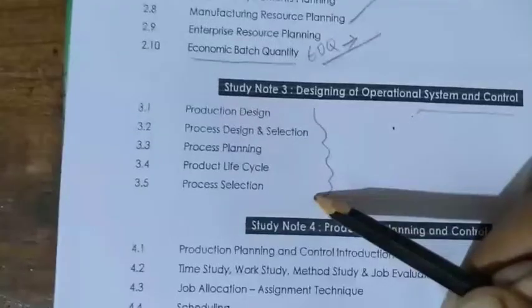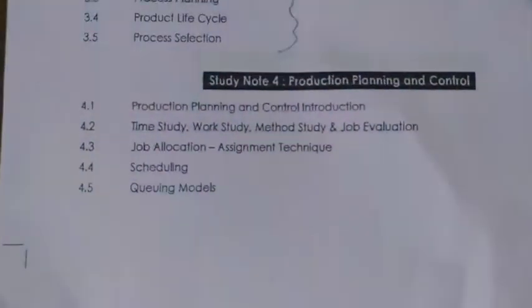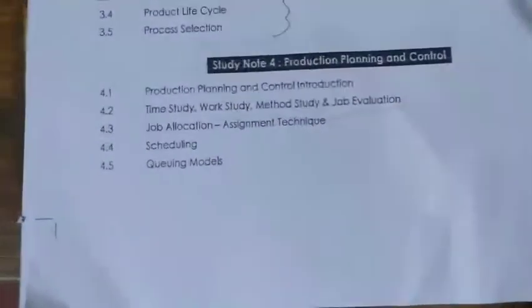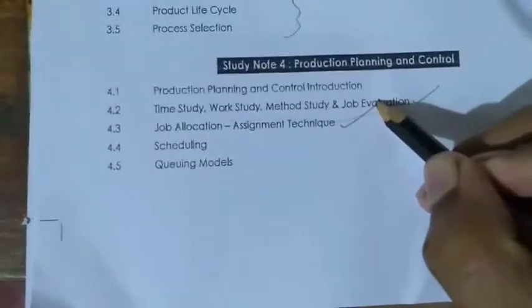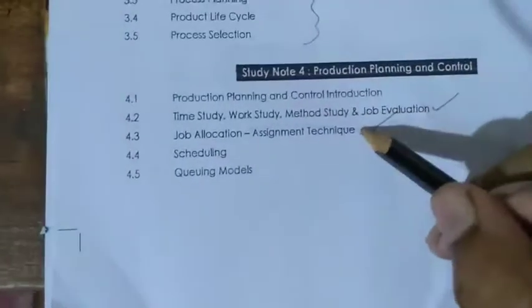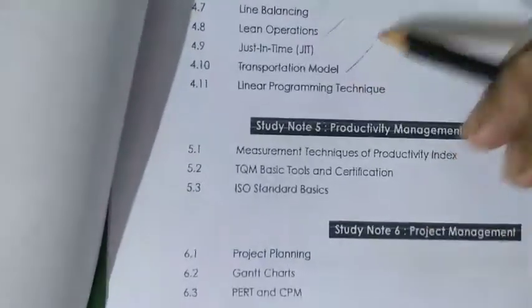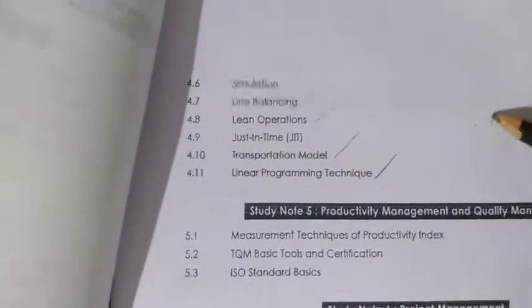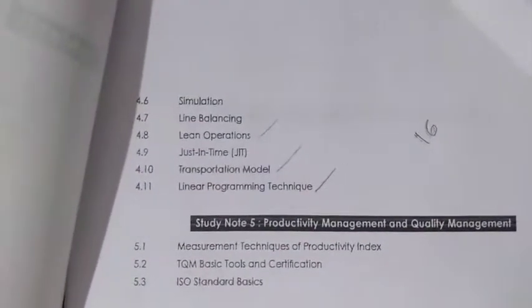The fourth chapter is an important chapter: Production Planning and Control. This covers time study and work study, job allocation, assignment techniques, scheduling, QE model, simulation, line balancing, line operation, transportation, and linear programming techniques. In this chapter, we will learn around 50 number questions, covering complex numerical and important questions.